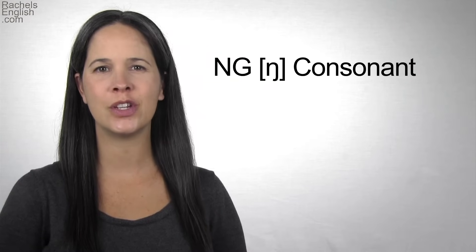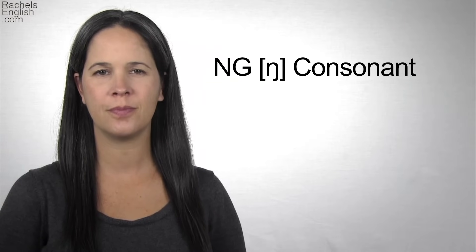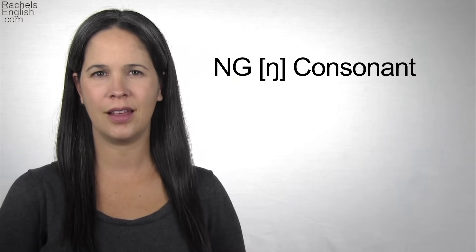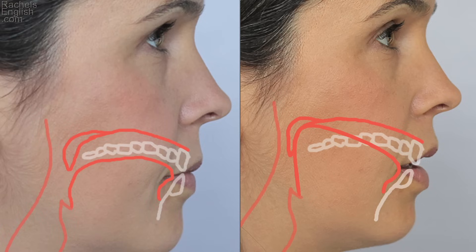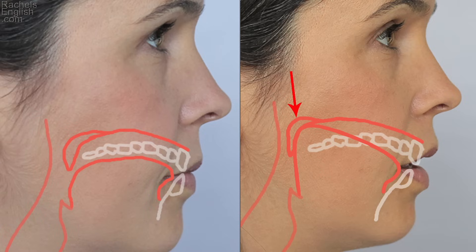To make this sound, the jaw drops a little bit. The lips part and the back part of the tongue stretches all the way up to the soft palate. The tongue tip is forward. Because the soft palate is lowered, air comes up through the nasal passages. This makes it a nasal consonant. You can feel the vibration in your nose.